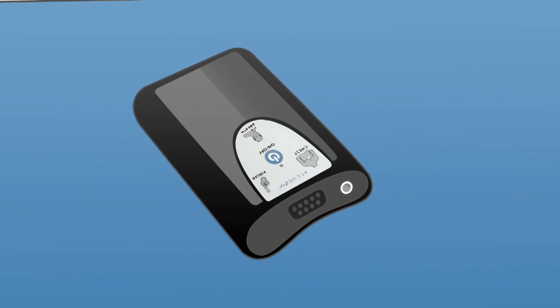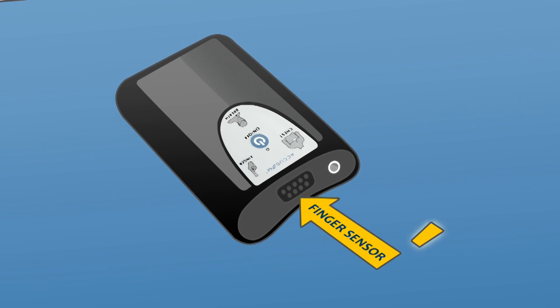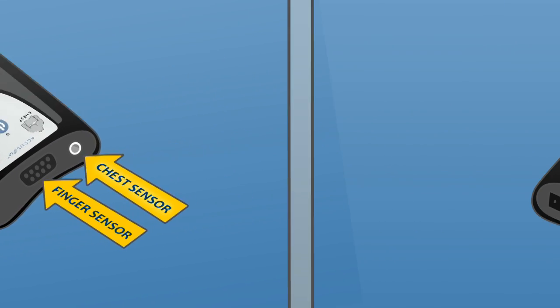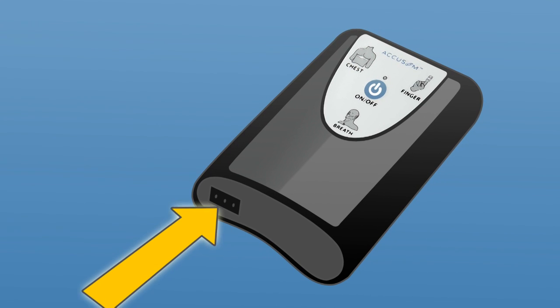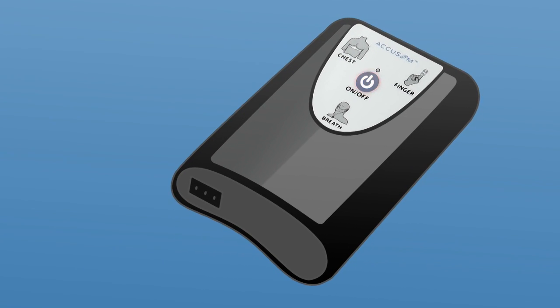The top panel has an opening to connect the finger sensor and the chest sensor. The bottom panel has an opening to connect the breath sensor. The on-off button is on the front panel.